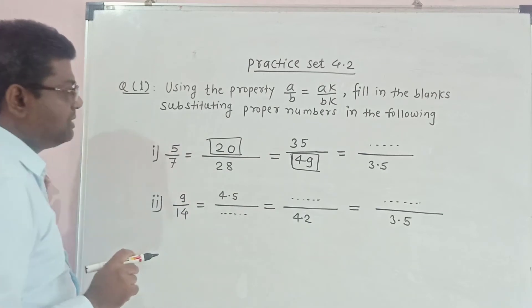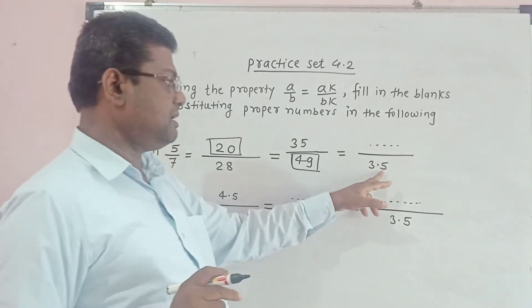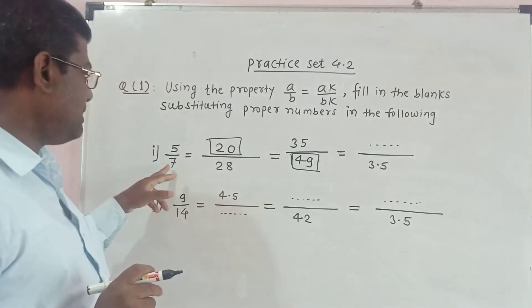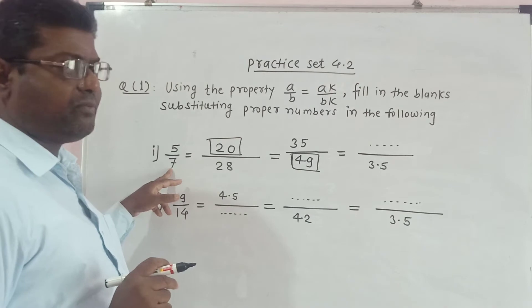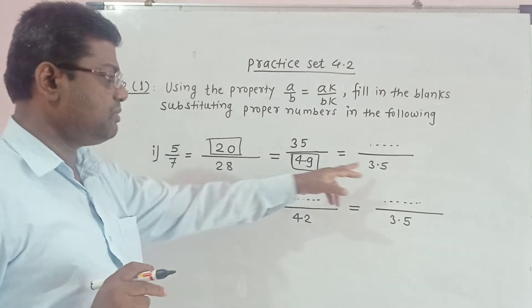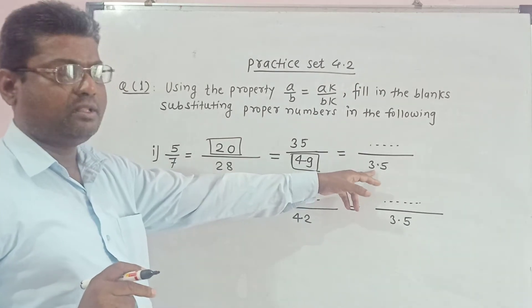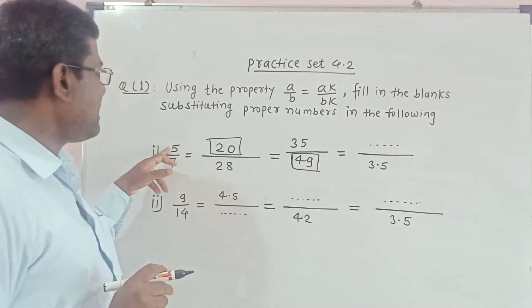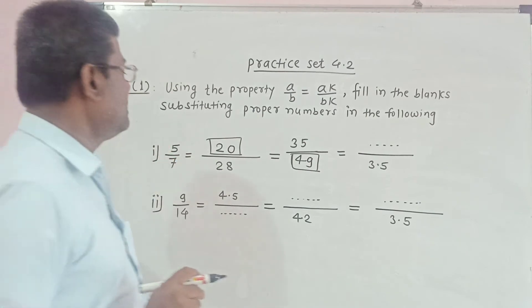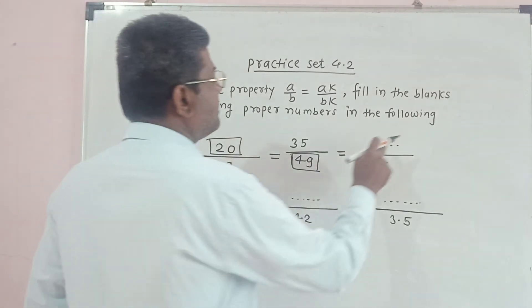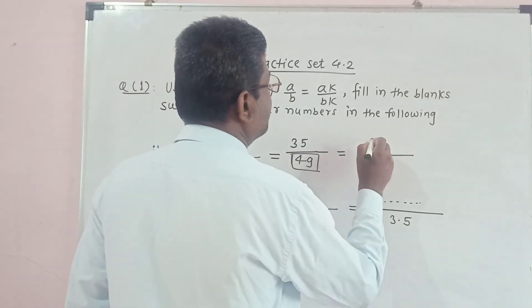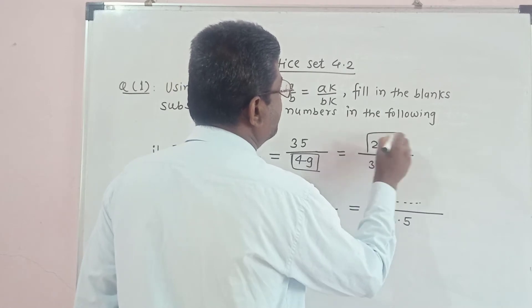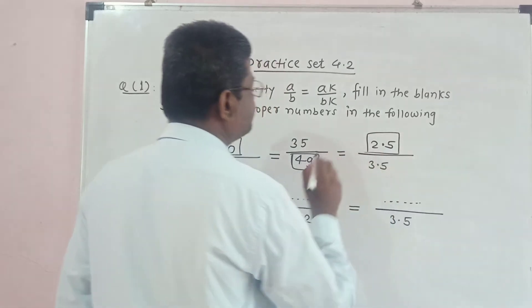Now, here the denominator is 3.5. If we divide 7 by 2, we get 3.5. Therefore, 5 divided by 2 will be 2.5. Here the answer will be 2.5.